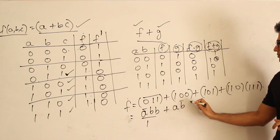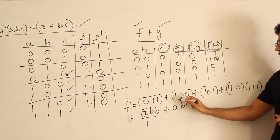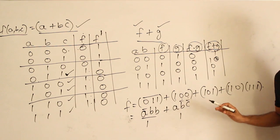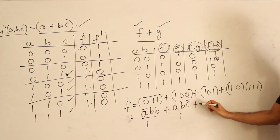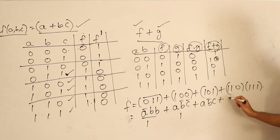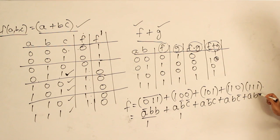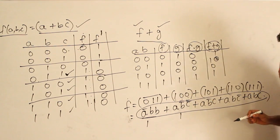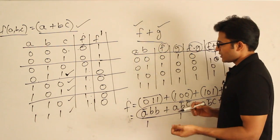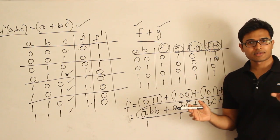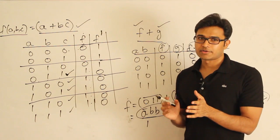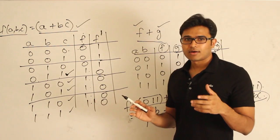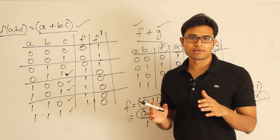Similarly, input 1,0,1 is represented as ab'c; input 1,1,0 is represented as abc'; and input 1,1,1 is represented as abc. So every function could be represented in this canonical form. Next we shall see what are various types of canonical forms and how to represent them. Understand that every expression is capable of acting as a function, and every function can be combined with others to form a bigger function. Every function can be represented using canonical forms. These are all going to play a big role when you are trying to construct and minimize circuits.